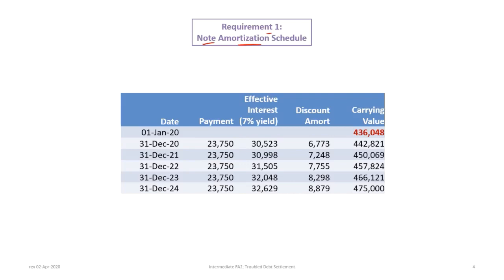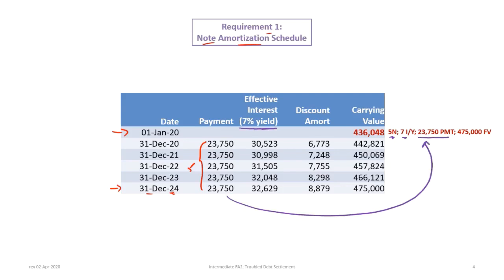What we have here is a note starting on January 1st, 2020, with the last payment due December 31st, 2024. So this is a five-year note with five payments. The present value is calculated as follows: 5N for five years, an effective interest rate of 7%, and a payment of $23,750. The future value must end up being $475,000, and calculating the present value should give you $436,048.